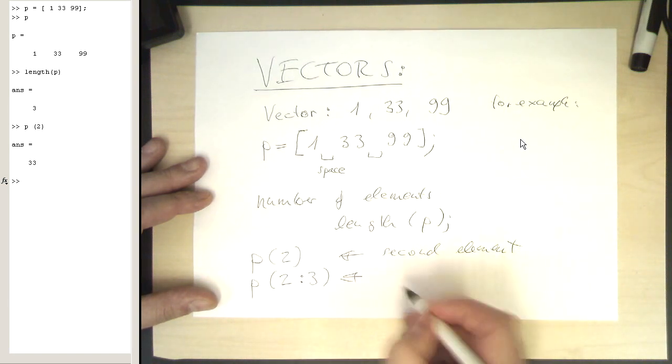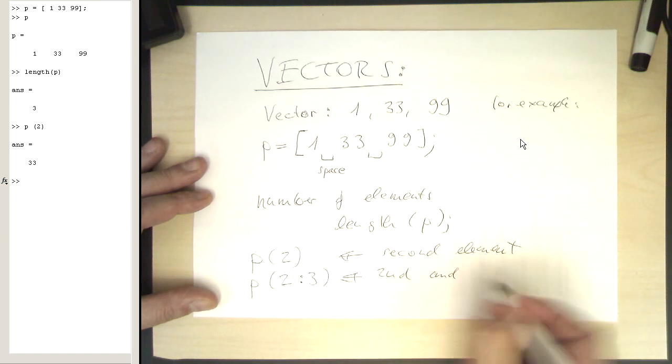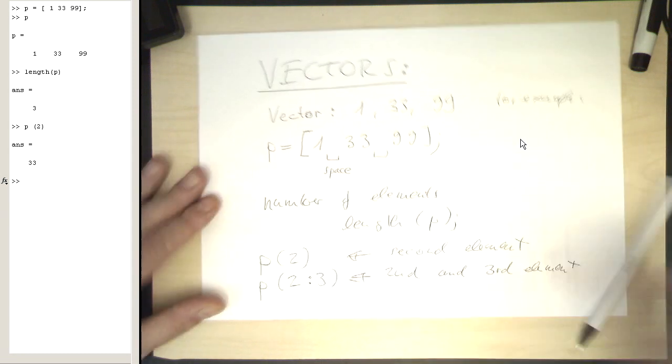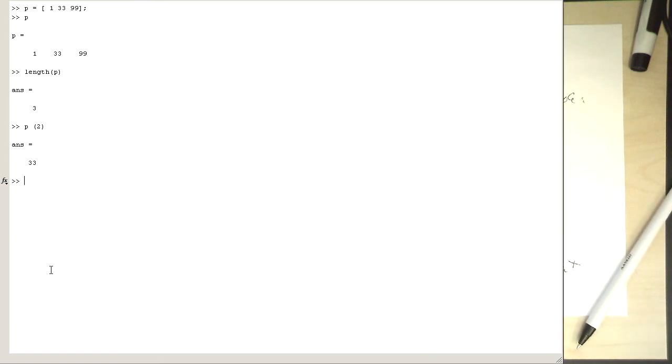Then we write this in this way. So let's say that's the second and third element. So let's do this. If we write P equals 2 colon 3, then we're getting the second and third element of the vector.